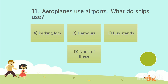Question number 11. Aeroplanes use airports. What do ships use? Option A: Parking lots. Option B: Harbors. Option C: Bus stands. Option D: None of these. Your time starts now.